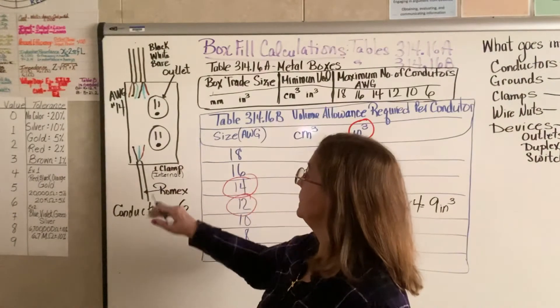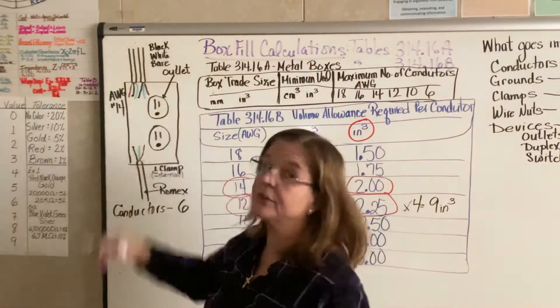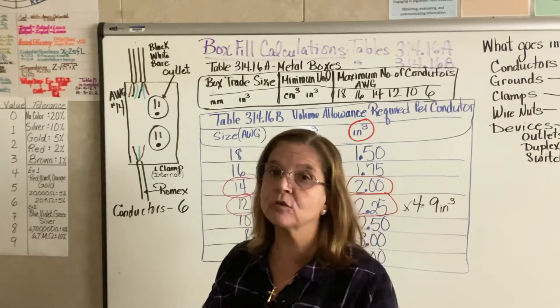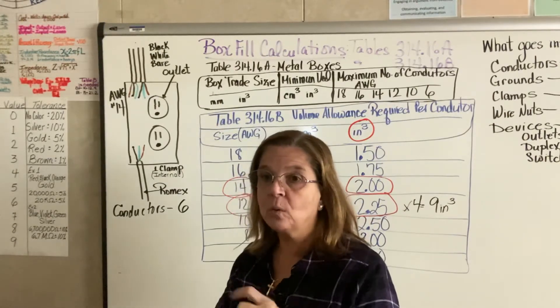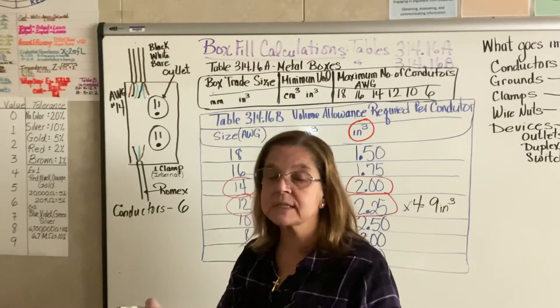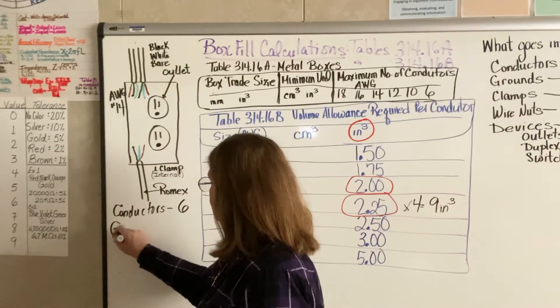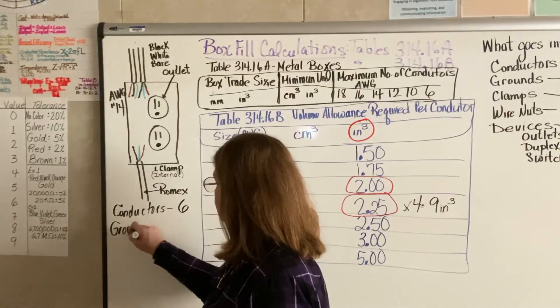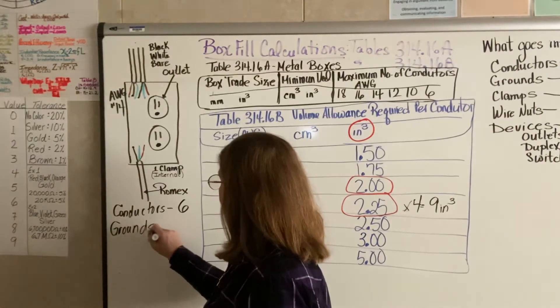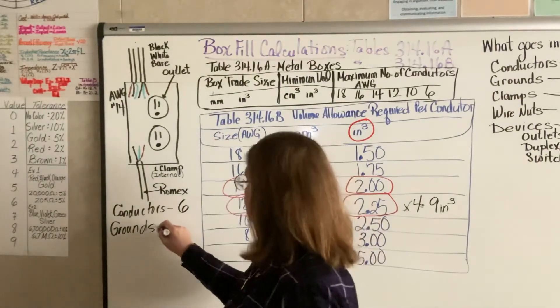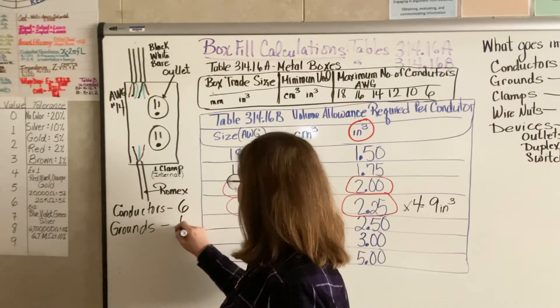Next thing I look at is, well, I do have the three grounds, but we only count the grounds once. You pick whatever is the largest AWG. So for the grounding wires, all together there's three, but we count it only once. So that's going to be one.